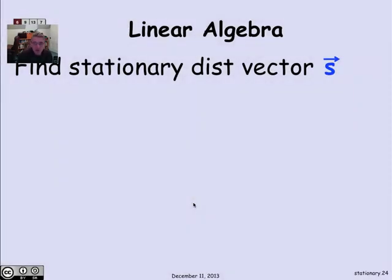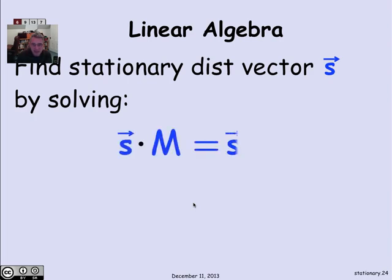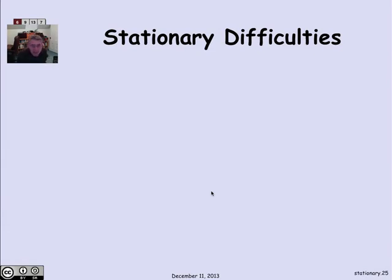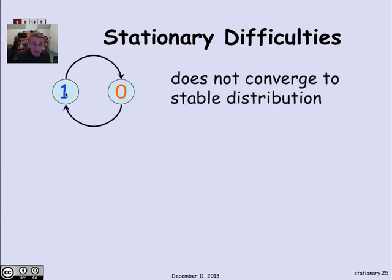In general, we want to find the stationary distribution vector S. We get this by solving the vector-matrix equation: the distribution vector times the edge probability matrix equals that same distribution vector. If there are n states, this is an n×n system of equations with the additional constraint that the norm of the stable vector equals 1, to avoid the degenerate zero solution.